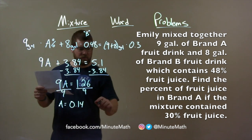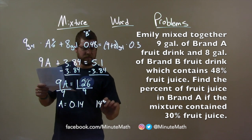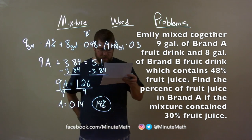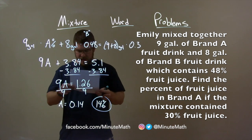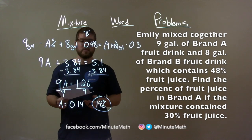which as a decimal is 14%. And so, our final answer is the brand A, right? When we mix it up, contained 14% fruit juice.